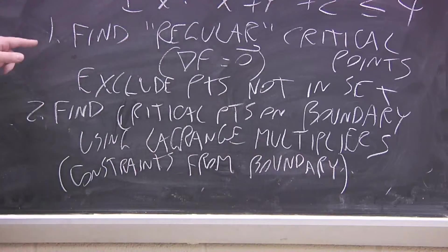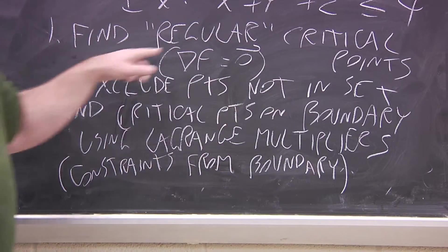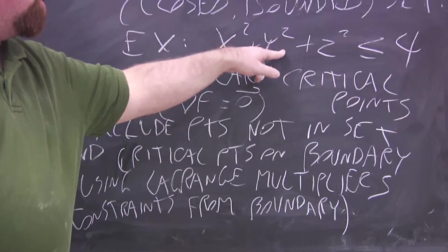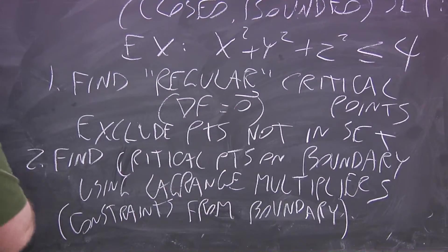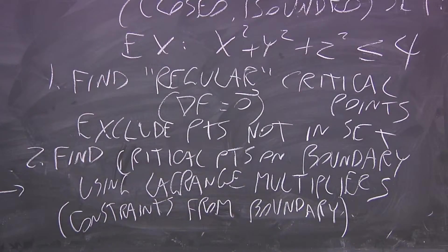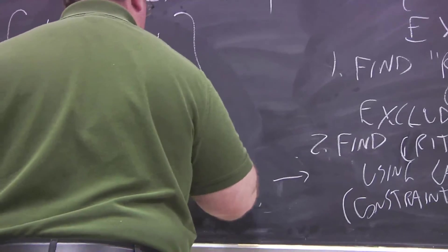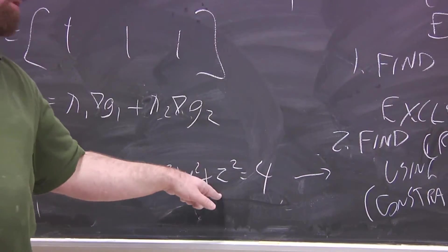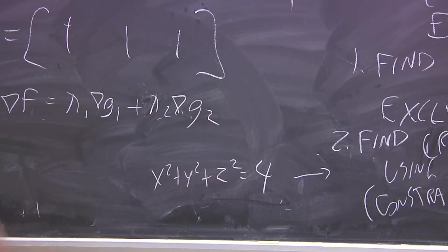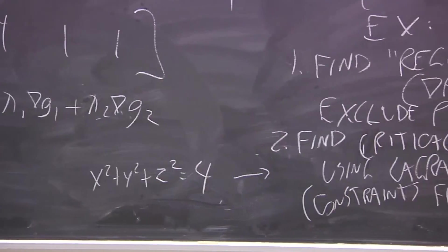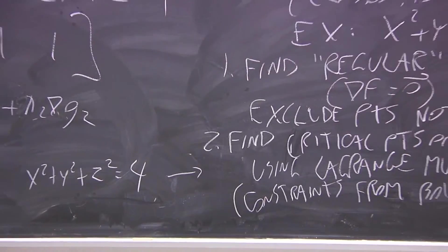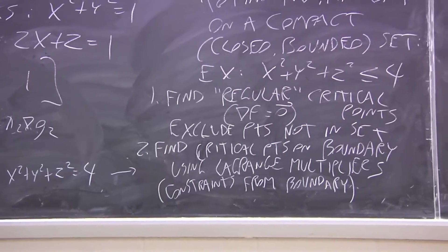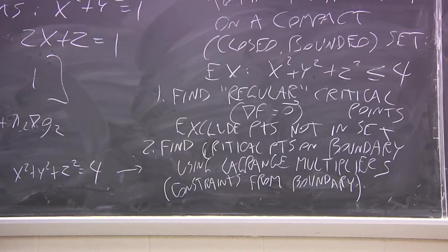This part will help you find any potential max or min in the interior of the sphere. In this example, your constraint would be X squared plus Y squared plus Z squared is equal to 4. So you're finding max or min of F subject to this constraint. This gives you additional candidates. There are points in the interior that could be max or min, and points on the boundary that could be max or min.